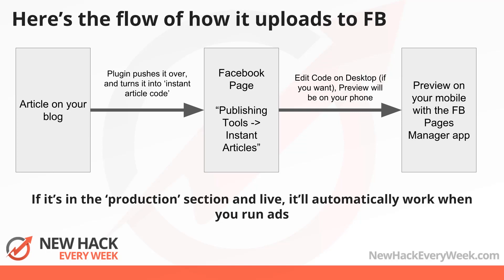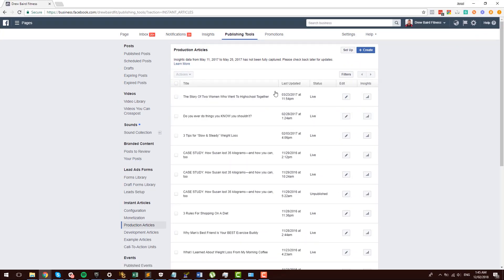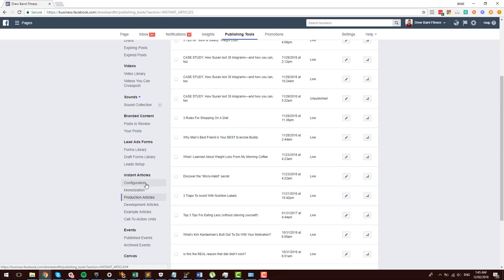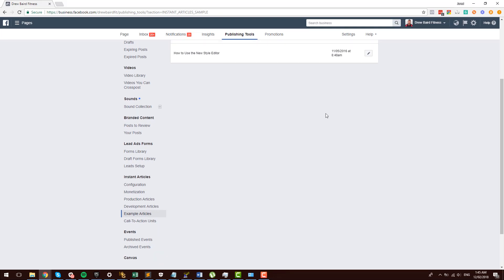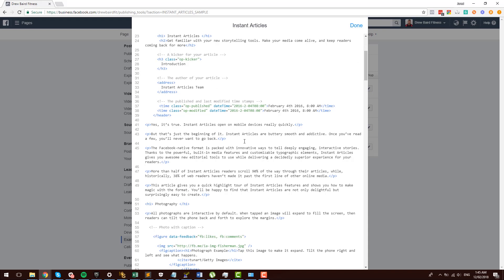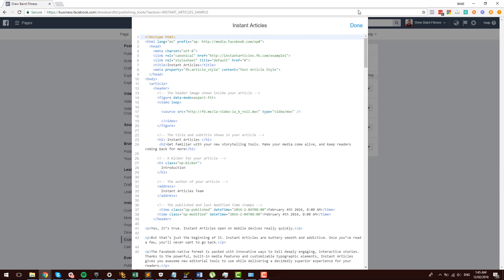I'm showing you the basics, and you really don't need to go into the complex hacks here. But this is a new hack every week, so I'm going to show you how much you can hack this if you really have the motivation to make money off it. You edit the code on desktop, and then you preview it on your phone using the Facebook Pages Manager app. If an instant article is in the production section and it's marked as live, it will automatically work when you run ads or if you make an organic post.